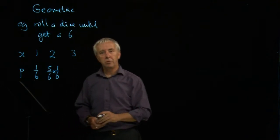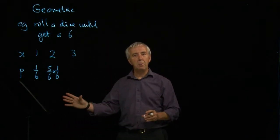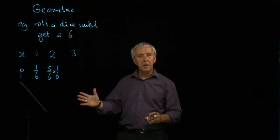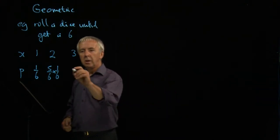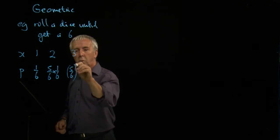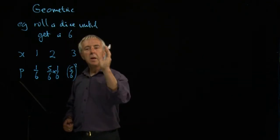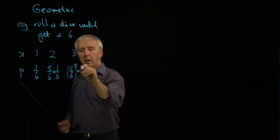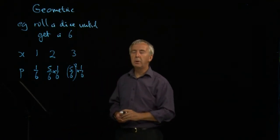Might need three goes. That would be if we failed on the first and second attempt and then got our success. The chance of that happening is five-sixths squared, fail and then another fail, and then a success. And so on.